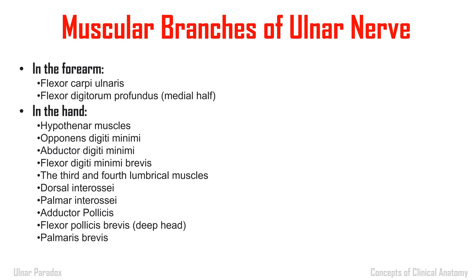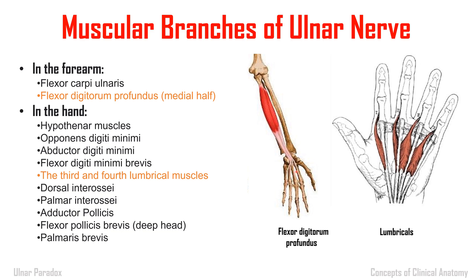To understand the concept of ulnar paradox, you should know the muscles supplied by the ulnar nerve. Out of the muscles supplied by the ulnar nerve in the forearm and hand, two are more important: the flexor digitorum profundus medial half — the lateral half is supplied by the median nerve — and the third and fourth lumbricals, that is the medial two lumbricals, which are also supplied by the ulnar nerve.